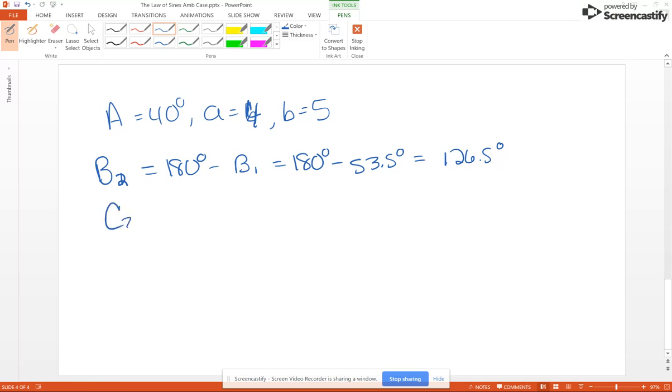Now angle C2 is 180 minus 40 minus 126.5 degrees, which is 13.5 degrees.